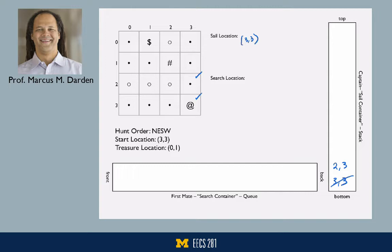That's location 2,3. As we look east from the current location 3,3, that's out of bounds; south out of bounds. Looking west, we see a new undiscovered water location, and we're going to mark that as discovered and add it to our sail container — that's at location 3,2. We continue with investigation until there's nothing left to investigate or we have found the treasure location.